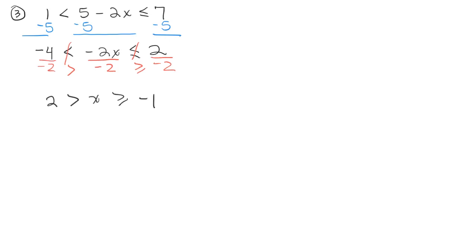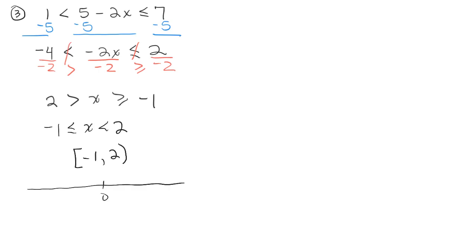Notice we have greater than instead of less than now. Reading from right to left, that's negative 1 is less than or equal to X is less than 2 — the same thing as saying 2 is bigger than X, which is bigger than negative 1. In interval notation, that's [-1, 2). On a graph with points at negative 1, 0, 1, 2, and 3, it goes in between negative 1 and 2, with a closed dot at negative 1 and an open dot at 2.